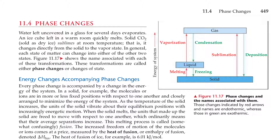Every phase change is accompanied by a change in the energy of the system. In a solid, for example, the molecules or ions are in more or less fixed positions with respect to one another and closely arranged to minimize the energy of the system. As the temperature of the solid increases, the units vibrate about their equilibrium positions with increasingly energetic motion. When the solid melts, the units are freed to move with respect to one another, which ordinarily means their average separation increases. This melting process is called, somewhat confusingly, fusion.